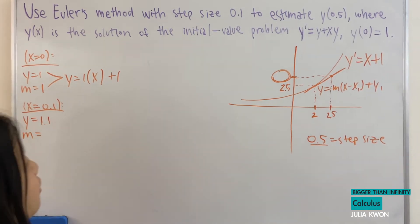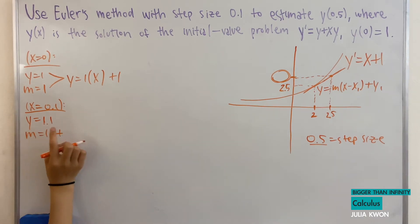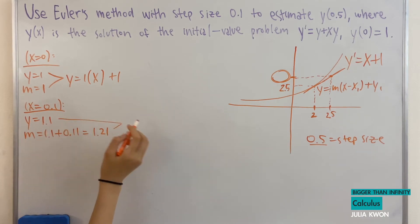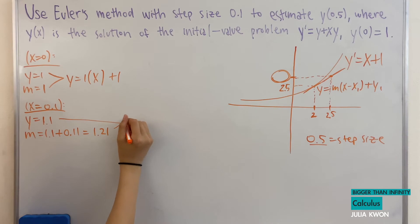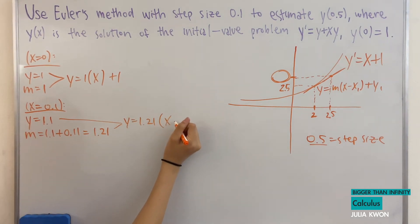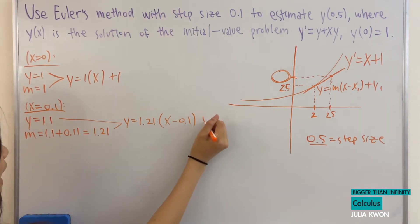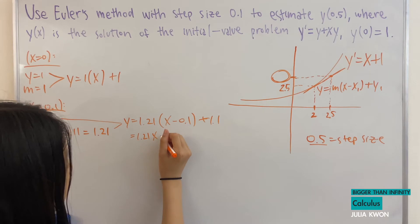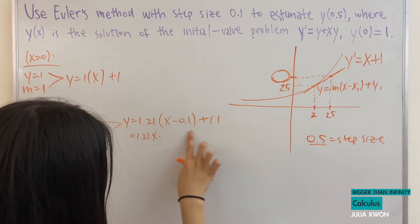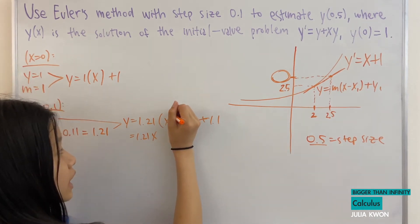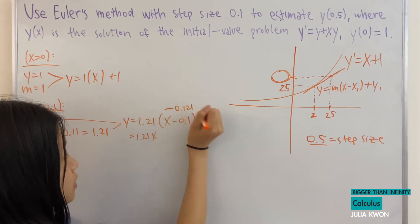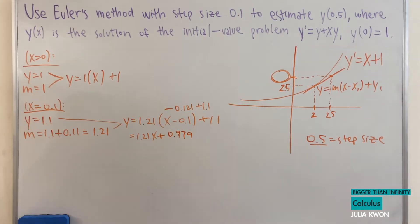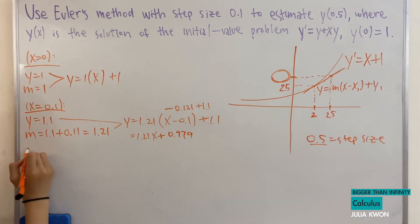For the slope at x = 0.1, we compute y' = y + x·y = 1.1 + (1.1)(0.1) = 1.1 + 0.11 = 1.21. Using y = 1.1 and slope = 1.21, the tangent line at x = 0.1 is y = 1.21(x − 0.1) + 1.1, which simplifies to y = 1.21x + 0.979.